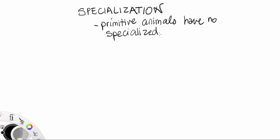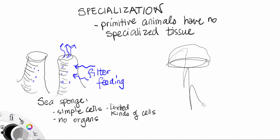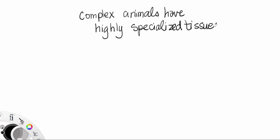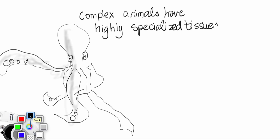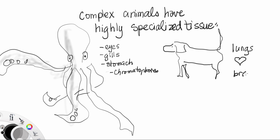The next evolutionary trend is known as specialization. Primitive animals have no specialized tissue. A sea sponge has only the kinds of cells that allow it to filter feed, and a jellyfish has a simple neural net. Complex animals have highly specialized tissues. An octopus, for example, can have eyes, gills, stomach, and chromatophores. Vertebrate animals have lungs, hearts, and a brain.